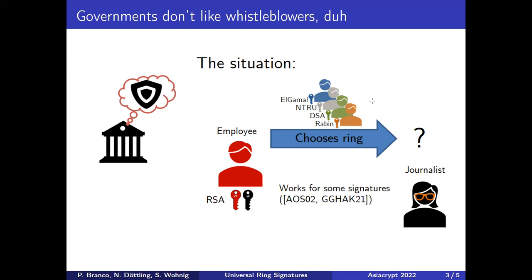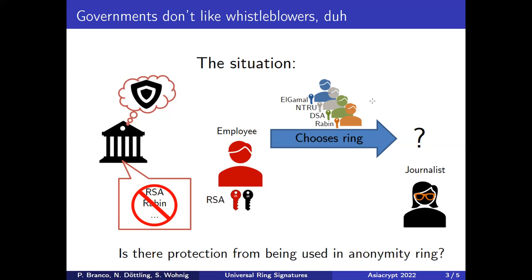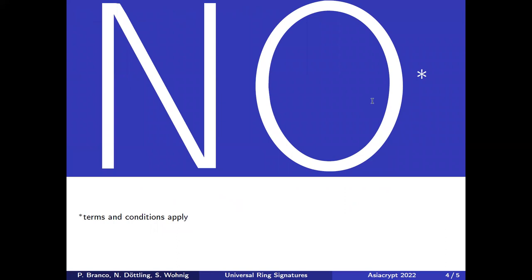There are some previous results that provide this for certain types of schemes with a certain structure, but not for all of them. So a clever government might have the idea to just forbid all the schemes that allow for ring signing at all. The question we ask is: is this a potential protection? Can you protect yourself by using a certain scheme from being used in an anonymity ring? And the answer is no.